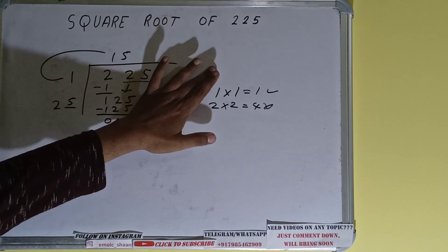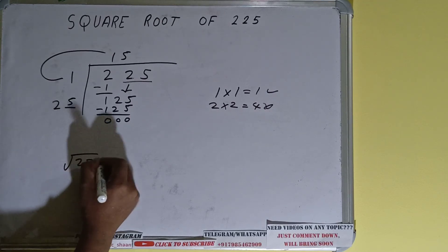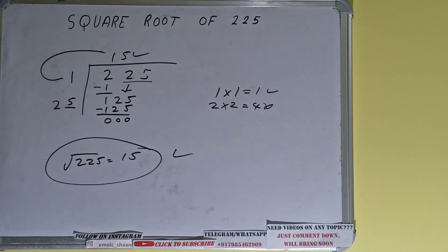Now we don't have any more unused pair over here, so our work is done and square root of 225 will be 15. That's it. That will be the answer.